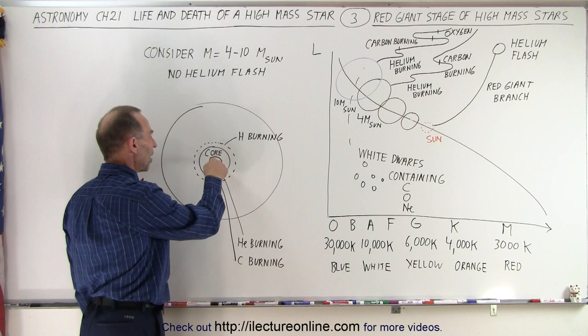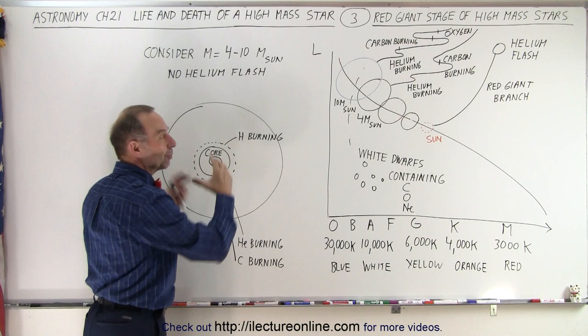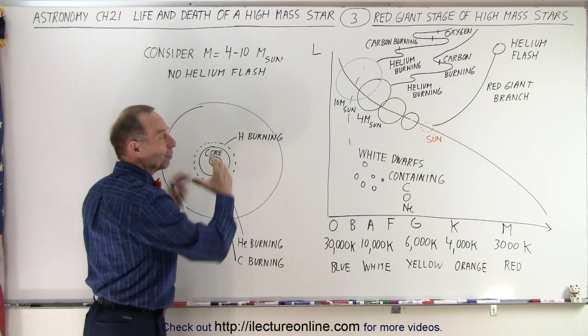So you're going to have all these various layers, where you have oxygen being burned, you have carbon being burned, and helium being burned, and hydrogen being burned, and a tremendous amount of heat is generated inside the core, reaching those very high temperatures required to do so.